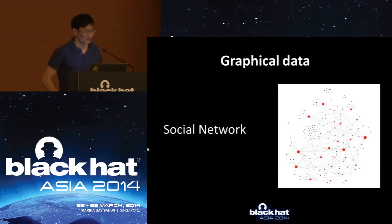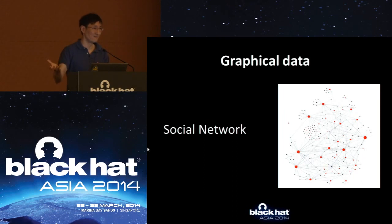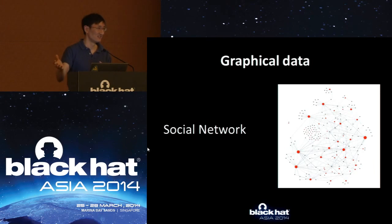Finally, one last example: graph data. Even if you take away identifiers from the structure of the graph, you can figure out and identify somebody. If you have some auxiliary graph dataset — say, Twitter or something more public — you can map your users to those users to identify them. And this is what people did.